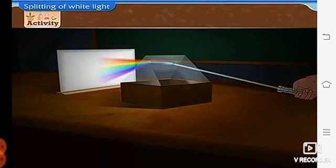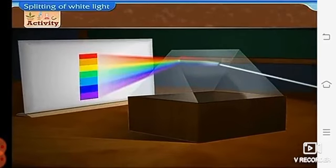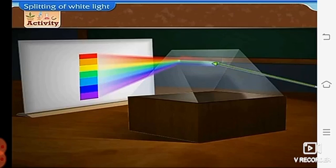Means, pass the light on the prism. The light will pass through the prism and then what do we see? Yes, we can see that the light passing through the prism splits in seven different colors on the white screen.